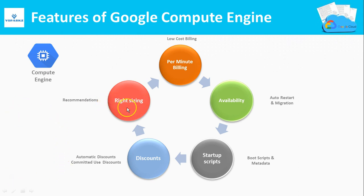Next is Right Sizing. Google Cloud will automatically give you recommendations for right-sizing your VMs based on the workload you are running. If you run more workload with fewer resources, it recommends increasing your virtual hardware. If you provision a very large machine but run a small workload, it recommends reducing your hardware. This will in turn save your cost.